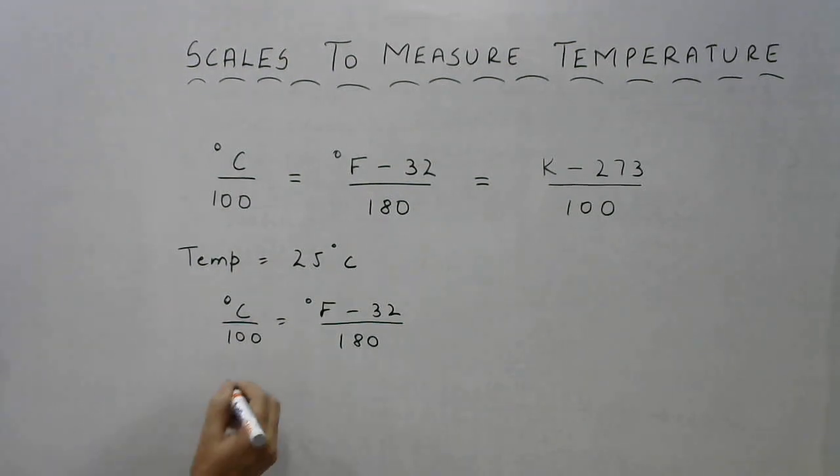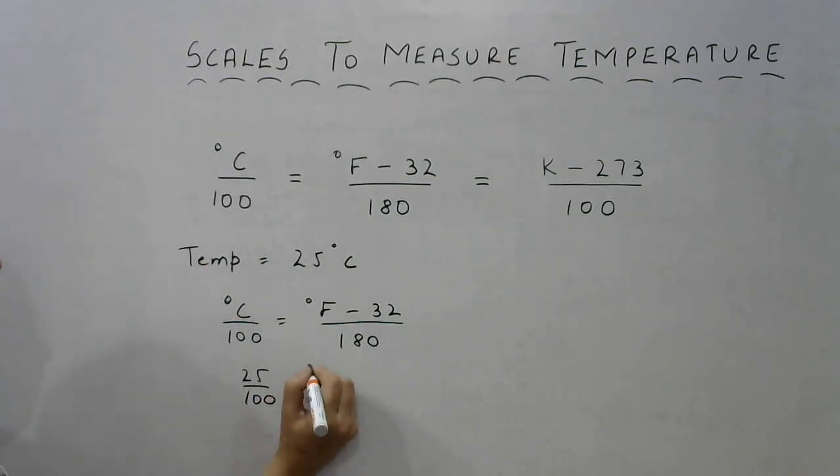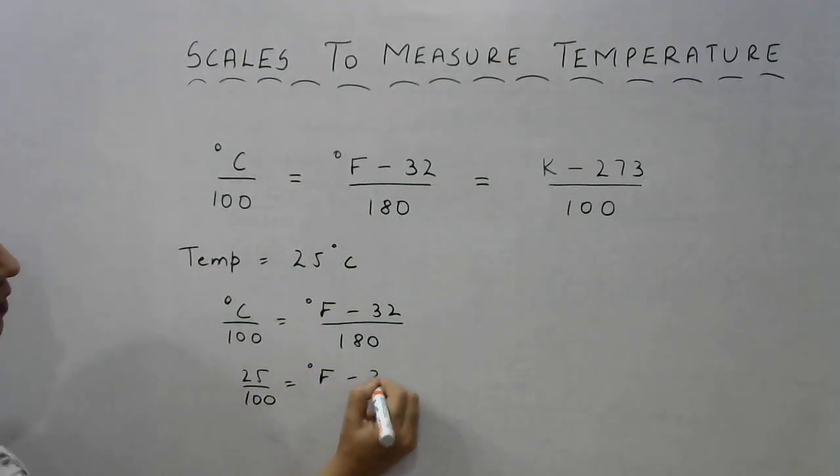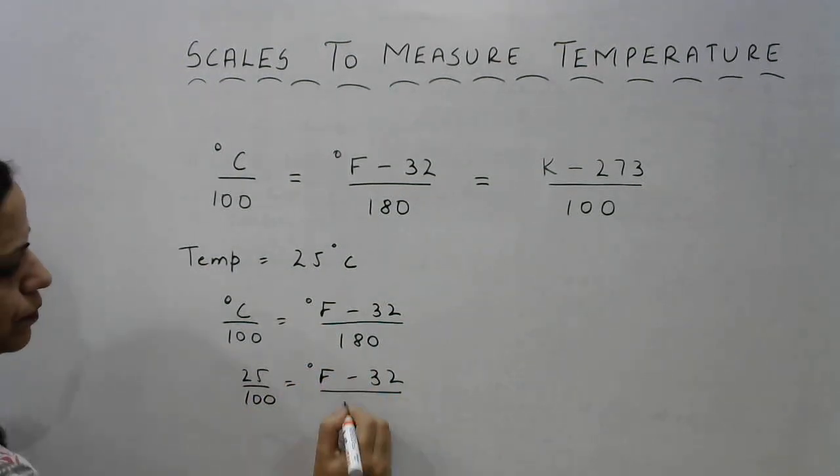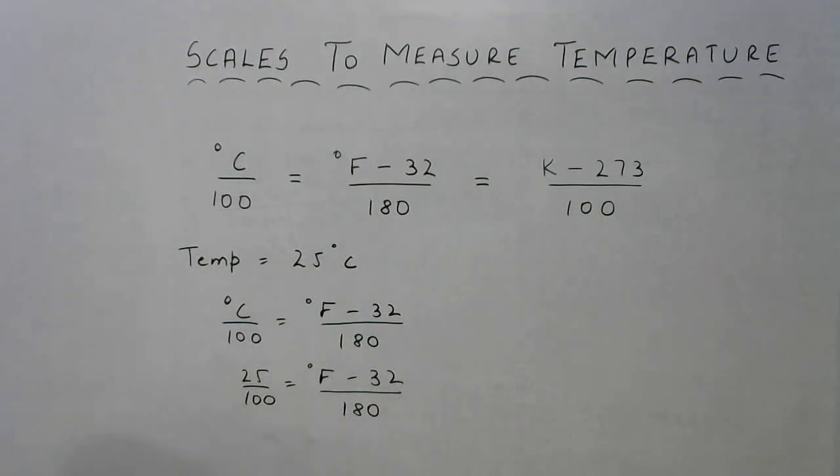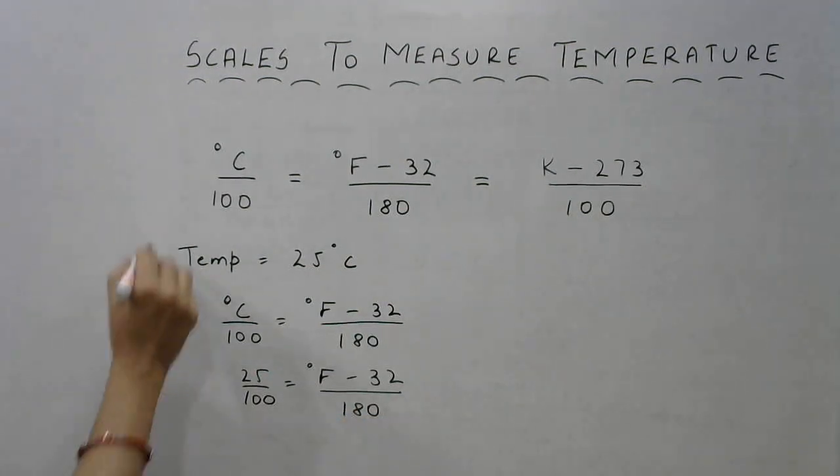Substitute the values in this formula. So what do we get? It becomes 25 upon 100 is equal to degrees Fahrenheit minus 32 upon 180. So this is what we need to simplify.